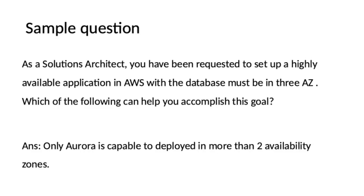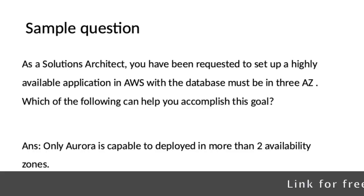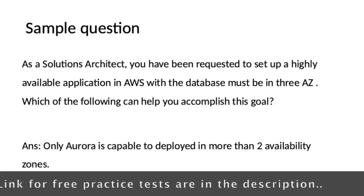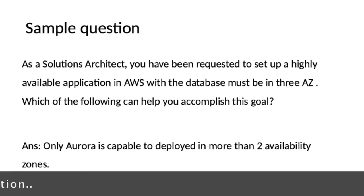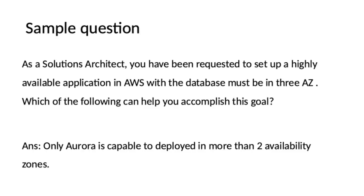Amazon Aurora is capable of deploying in more than two availability zones by default — this is the key point to remember before answering these sorts of questions. Sample question: As a solution architect, you have been requested to set up a highly available application in AWS where the database must be in three availability zones. Which of the following can help you accomplish this goal? Only Amazon Aurora is capable of deploying in more than two availability zones, so if the answer options include DynamoDB, RDS, or Redshift, please ignore them. The answer is Amazon Aurora.